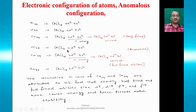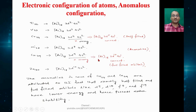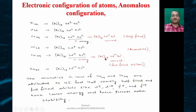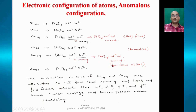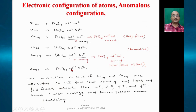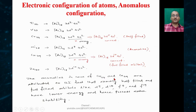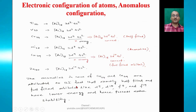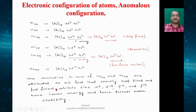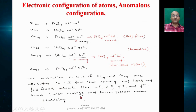For nickel (Z=28): [Ar] 3d⁸ 4s². For copper (Z=29), one might expect [Ar] 3d⁹ 4s², but that is wrong. The correct configuration is [Ar] 3d¹⁰ 4s¹. For zinc (Z=30): [Ar] 3d¹⁰ 4s². The anomalies in chromium (Z=24) and copper (Z=29) are attributed to the fact that exactly half-filled (d⁵) and fully-filled (d¹⁰) orbitals have lower energy and hence possess extra stability.